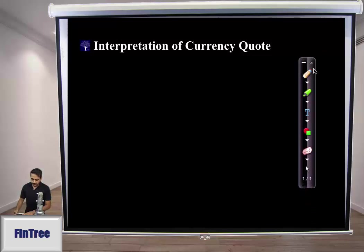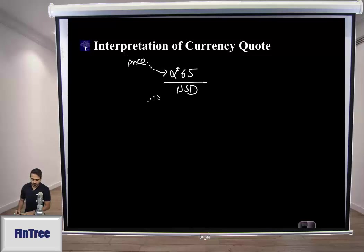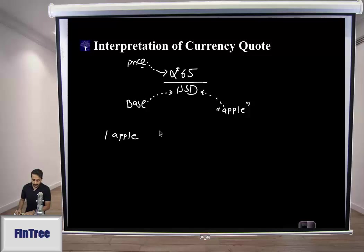The first point is how to interpret a currency code. For example, 65 Indian rupees for a US dollar — the currency in the numerator is called the price currency and the currency in the denominator is called the base currency. It really helps to think of the base currency as a commodity, like an apple. Then the fact that the other currency is called the price currency starts making sense: one apple is priced at rupees 65.